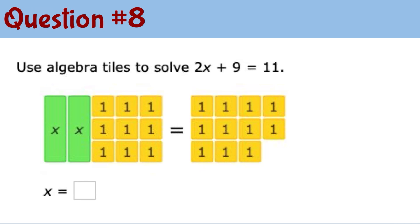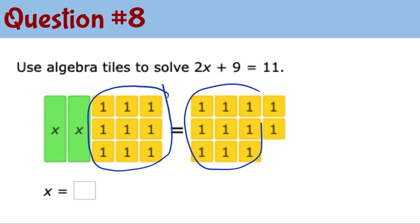Question number 8: use algebra tiles to solve 2x plus 9 equals 11. What I can do is take out 9 unit tiles on the left and also 9 unit tiles on the right. After taking out 9 unit tiles from both sides, we have 2 remaining x tiles on the left and 2 unit tiles on the right. We split up the 2 unit tiles between the 2 x tiles, so each x tile gets one — that's why x equals 1.